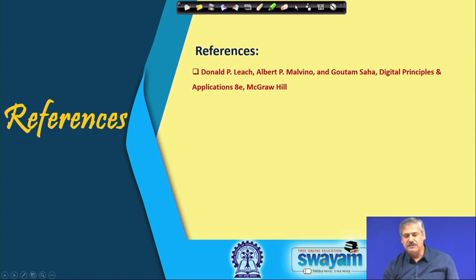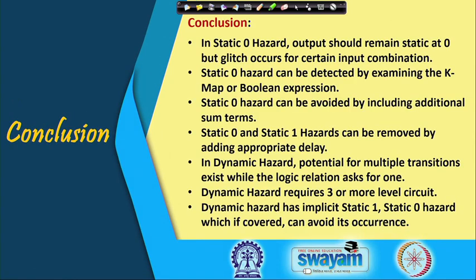To summarize today's discussion: Static-0 Hazard means the output should remain static at 0, but a glitch occurs for certain input combinations. It can be detected by examining the Karnaugh map or Boolean expression and avoided by including additional sum terms or appropriate delays. In Dynamic Hazard, the potential for multiple transitions exists instead of the single required transition; it requires three or more circuit levels, and covering the inherent implicit Static-1 or Static-0 hazard can avoid its occurrence.